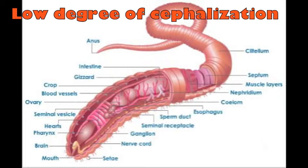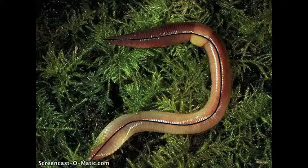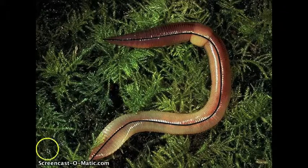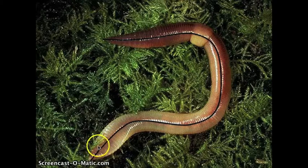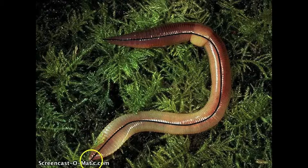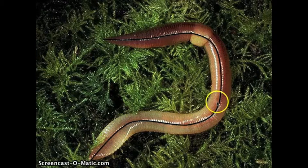In an earthworm, there is a typical head with a mouth and basic sensory organs, so therefore earthworms show a low degree of cephalization. An earthworm is bilaterally symmetrical, meaning the left and right halves are mirror images of each other. If you were to cut the earthworm straight down the middle, like shown here with this black line, the left side would look exactly like the right.